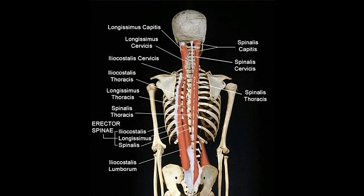Longissimus cervicis: arising from the transverse processes of the upper 5 thoracic vertebrae T1–T5, this muscle inserts in the transverse processes of the 2nd to 6th cervical vertebrae. It helps in extending the cervical region of the vertebral column and maintaining the erect posture. It also lends stability to the spinal column during flexion. When only the muscle on one side is working, it helps in bending and rotating to that particular side.